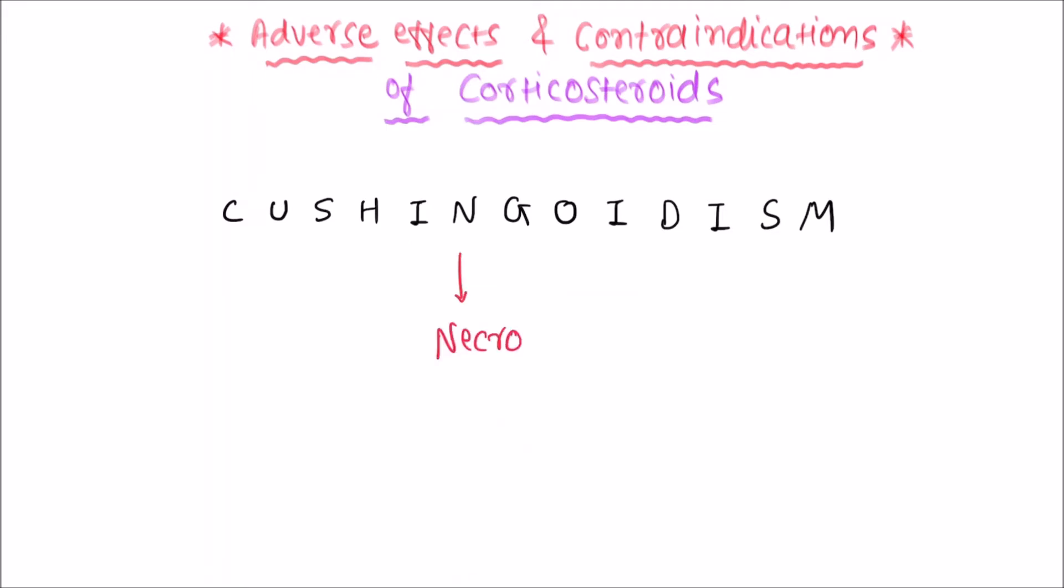N for necrosis. Glucocorticoids may cause avascular necrosis of bones and joints. The most common affected bone is head of femur.